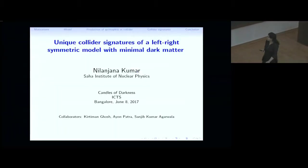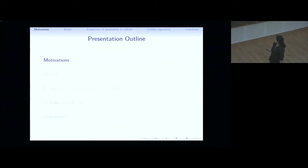Good afternoon, everyone. What I'm going to talk about today is the continuation of the previous talk. I'll talk about unique collider signatures of a left-right symmetric model with minimal dark matter. This is an ongoing work. My presentation outline is, I'll just briefly talk about the motivation and model because Ayn has already described it. And after that, I will talk about production of quintuplets at colliders. Then I will talk about the collider signatures. And after that, I will conclude.